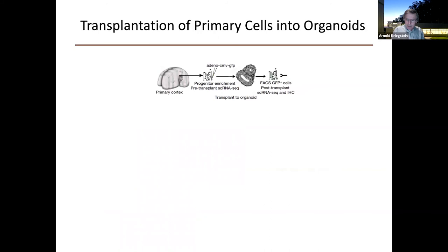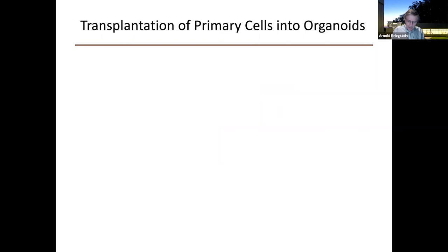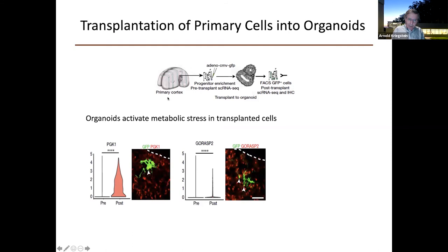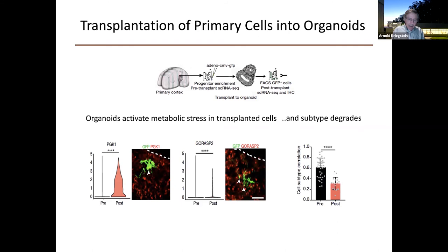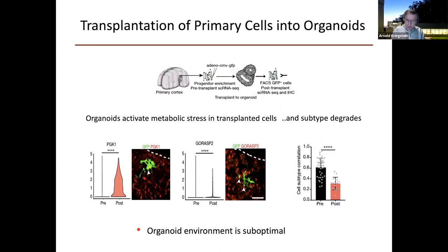We also did the reverse experiment — we labeled normal fetal cells with no stress and grafted them into organoids, then removed them a month later for single-cell RNA sequencing. The organoids were able to induce metabolic stress in these transplanted cells: fetal cells that started as normal began expressing the same metabolic stress genes as organoids after a month. Simultaneously, their subtype identity became degraded. This suggests that organoid technology could be improved to increase cell fidelity and reduce metabolic stress.